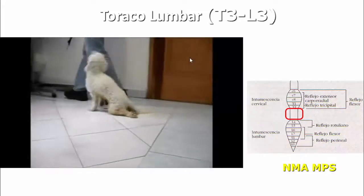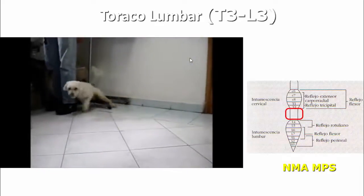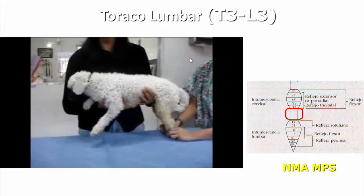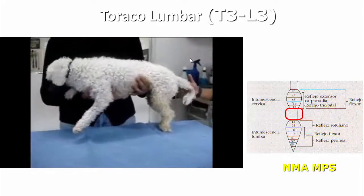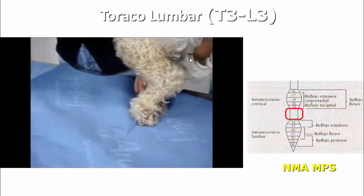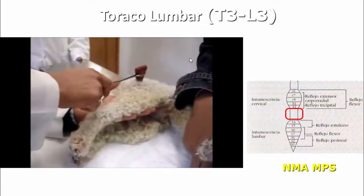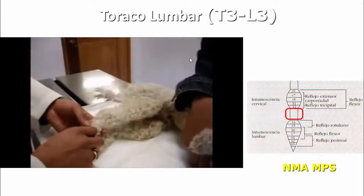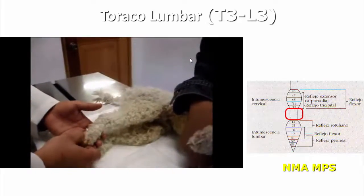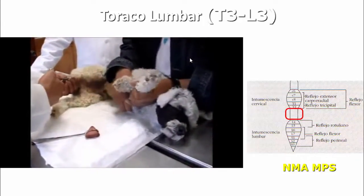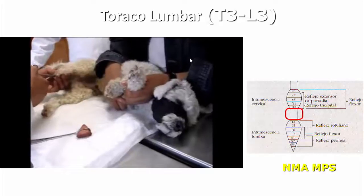Vamos al toracolumbar. El paciente viene arrastrándose también, sin embargo los reflejos sí están presentes. La propiocepción no responde, lo que nos indica que es una lesión neuronal. Los reflejos: vemos el miembro muy estirado, muy tenso, pero sí tiene respuestas. El reflejo flexor es muy bueno. Al evaluar la integración, el paciente hace actitudes de que le está doliendo. El paciente también venía parapléjico y sin movimientos. Me dirijo inmediatamente hacia la zona toracolumbar.